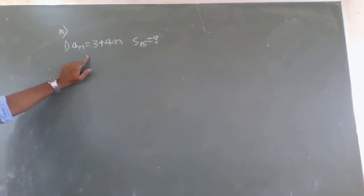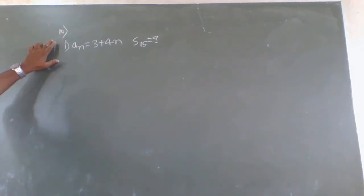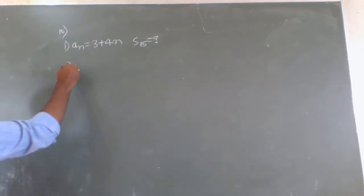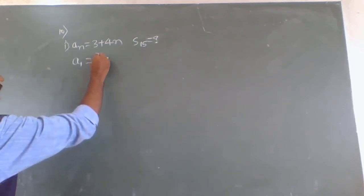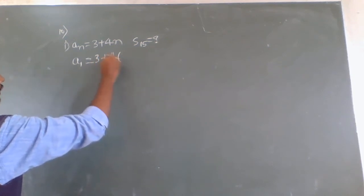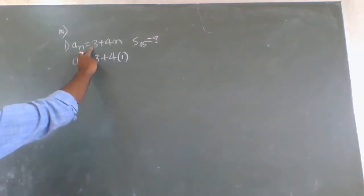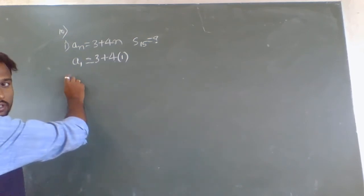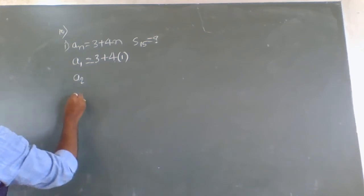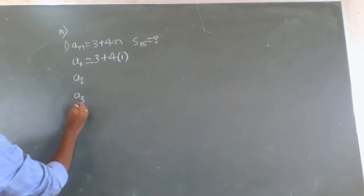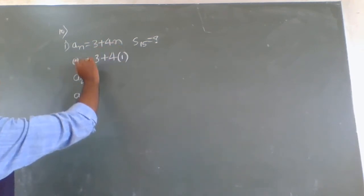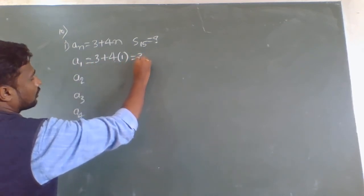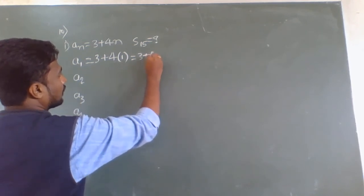To prove this forms an AP, first we have to calculate the terms a1, a2, a3, a4. To get a1, we substitute n = 1 into the formula 3 + 4n. So 3 + 4 × 1 = 3 + 4 = 7. Therefore a1 = 7.